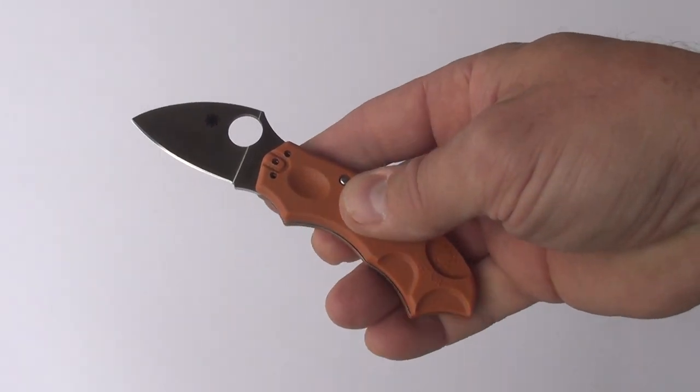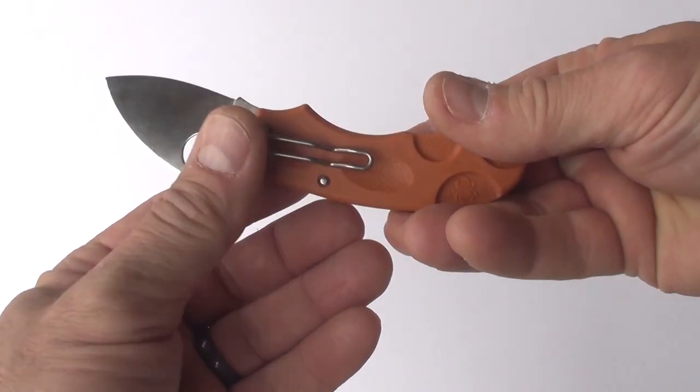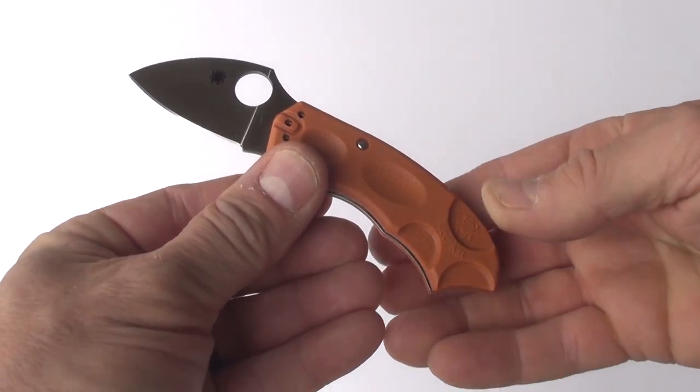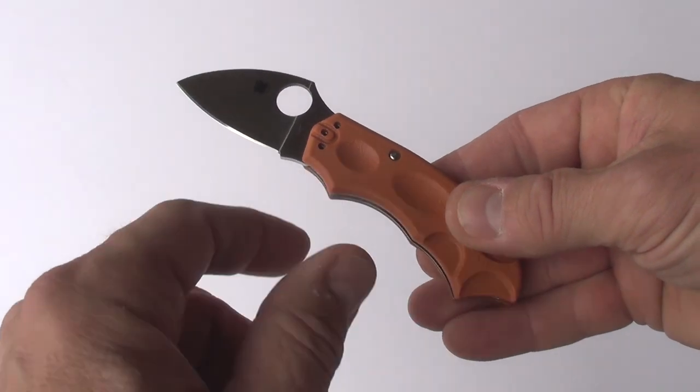Once it's open, the blade locks securely, but there are no obvious buttons, levers, or other mechanisms to release the lock and close the knife. That's because the phantom lock is built into the interior of the knife's handle.